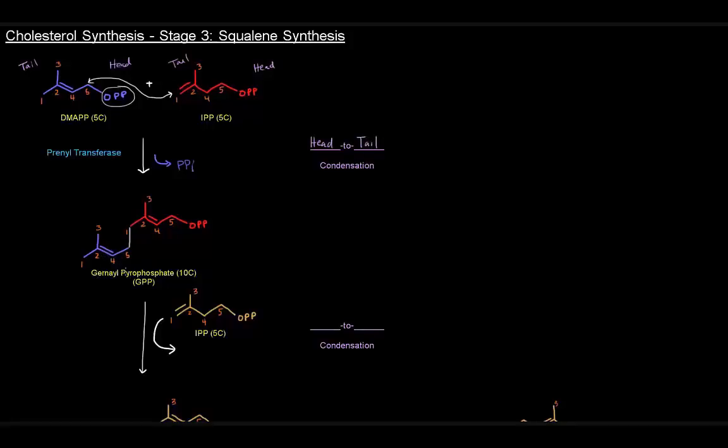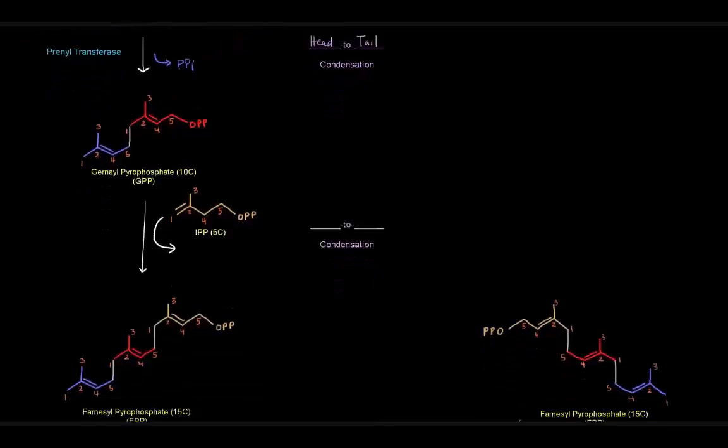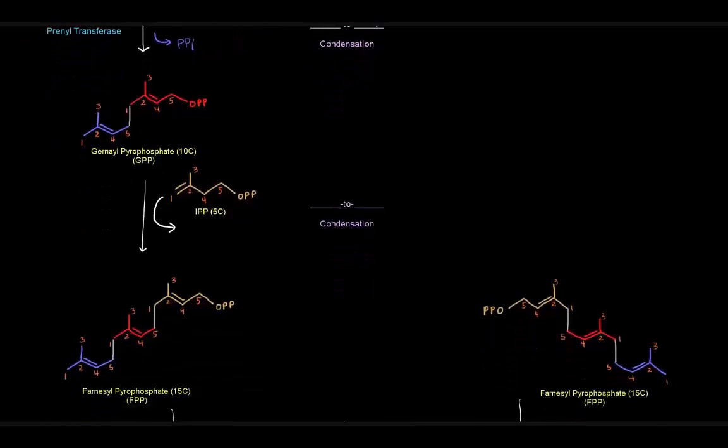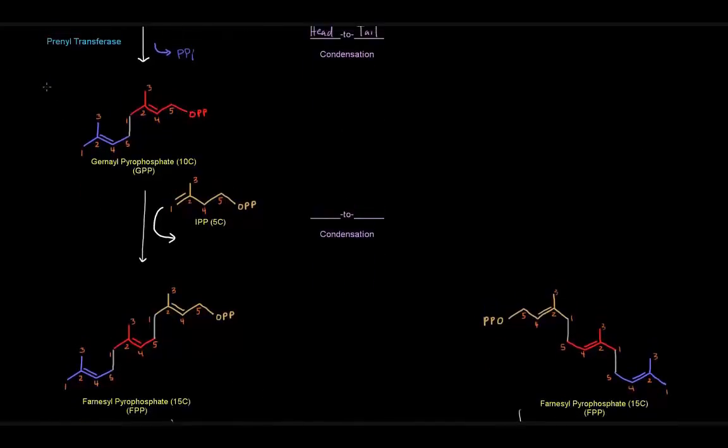Next, we're going to take geranyl pyrophosphate, excuse me, and we're going to link it to another IPP. We're going to get farnesyl pyrophosphate, which is going to be 15 carbons long, and we're going to have this end being the head end and this one being the tail end here. This is the tail end of IPP and the head end where the phosphates are. We're going to link carbon five of this red portion to carbon one of the IPP here, of the brown IPP.